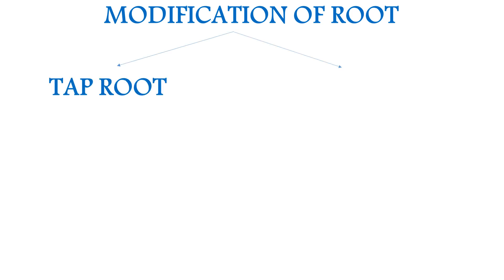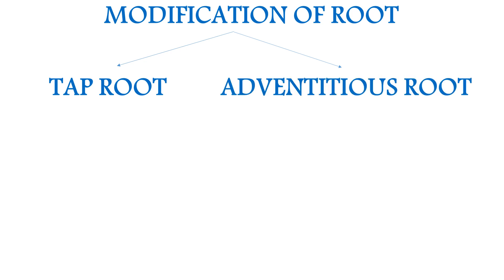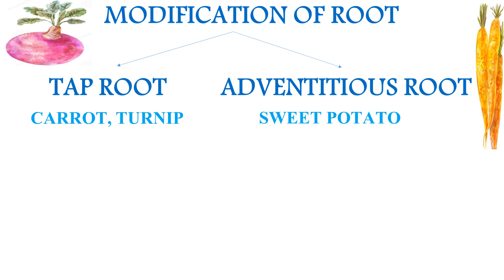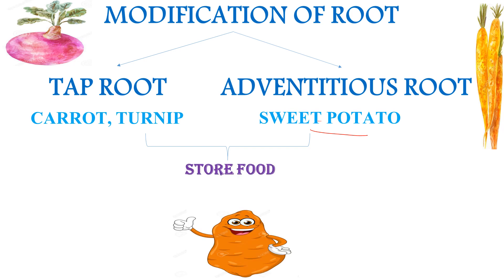The first trick is modification of roots. Roots are modified for storage of food and many other things. The first type is tap root and the second is adventitious root. For tap root the examples are carrot and turnip, while for adventitious root the example is sweet potato. All three — turnip, carrot, and sweet potato — have roots modified for storage of food.